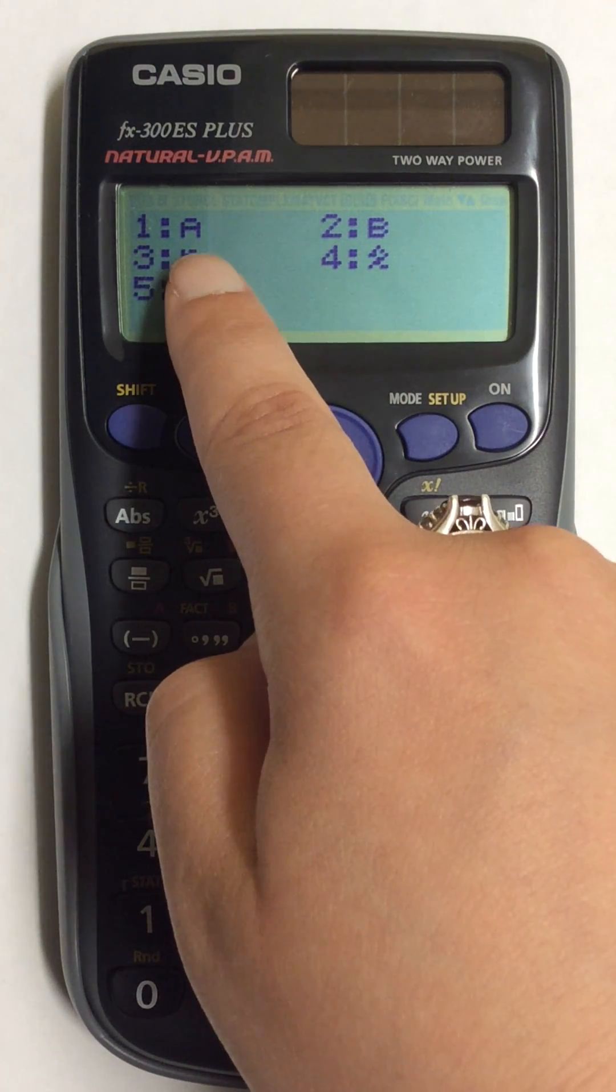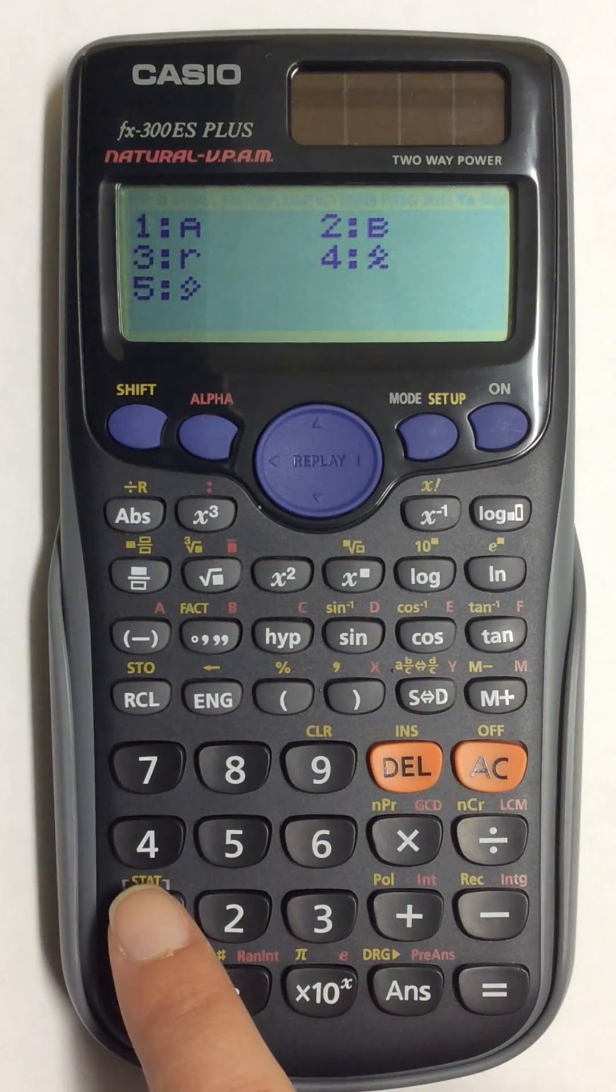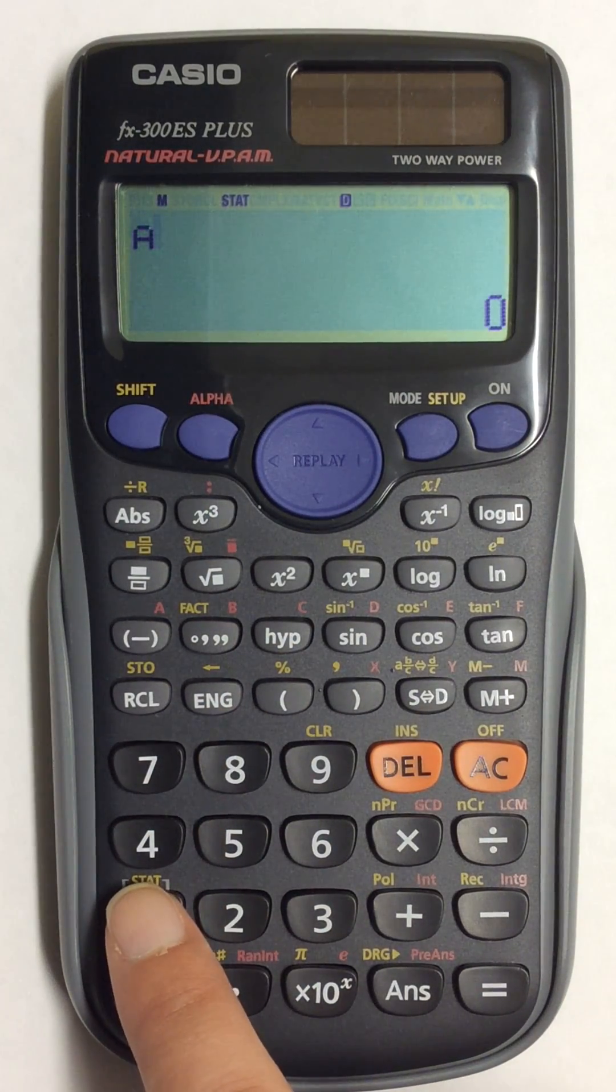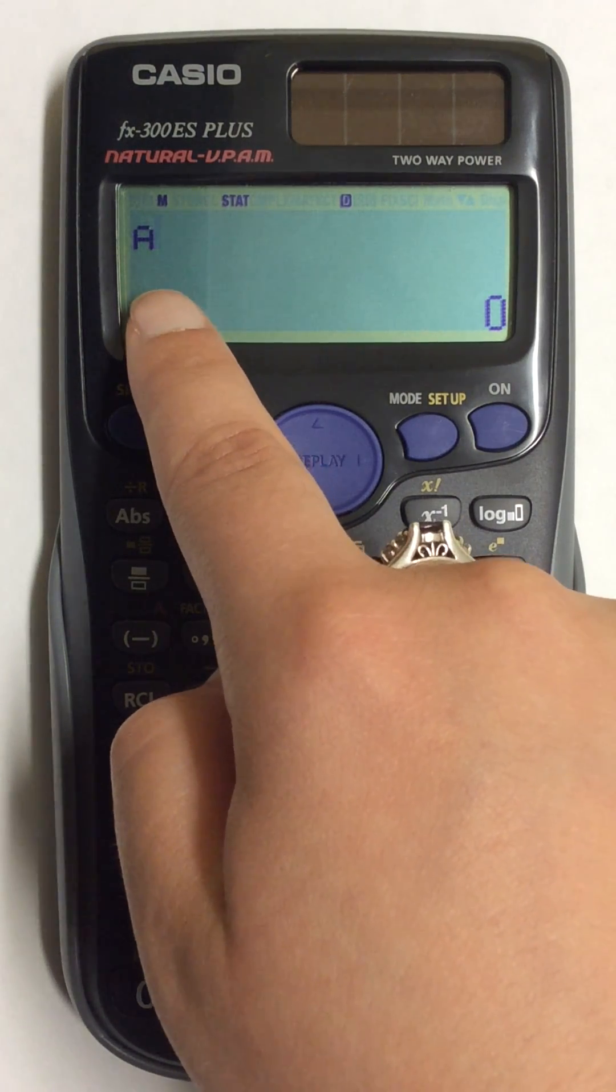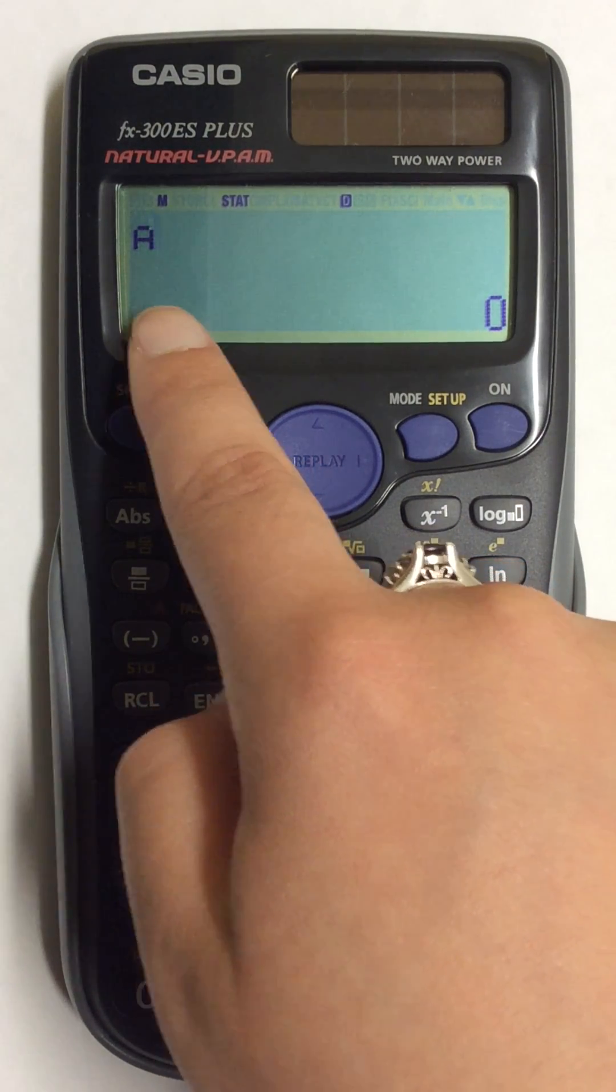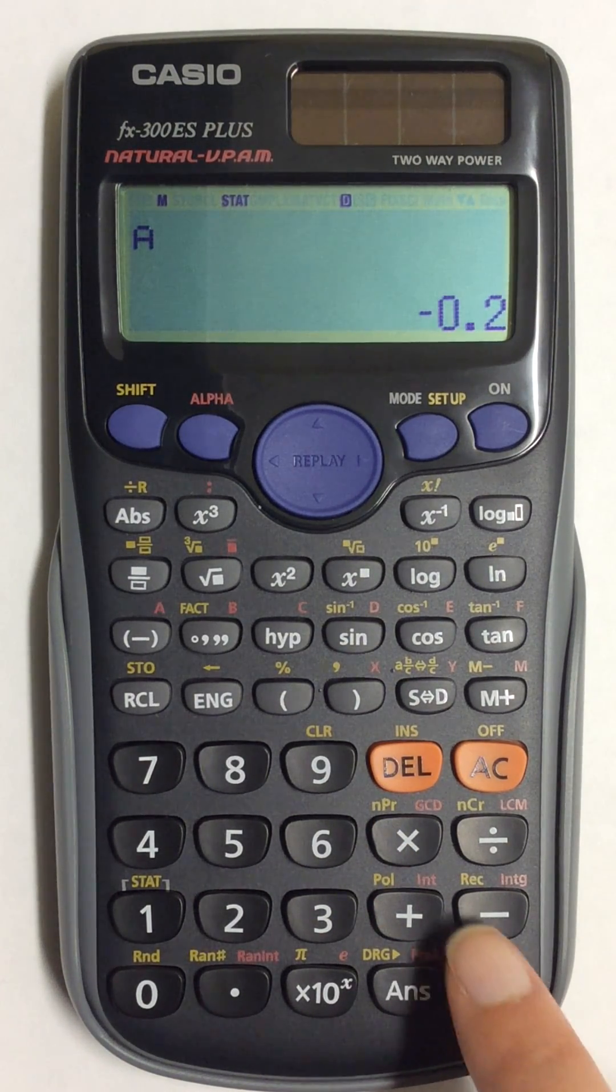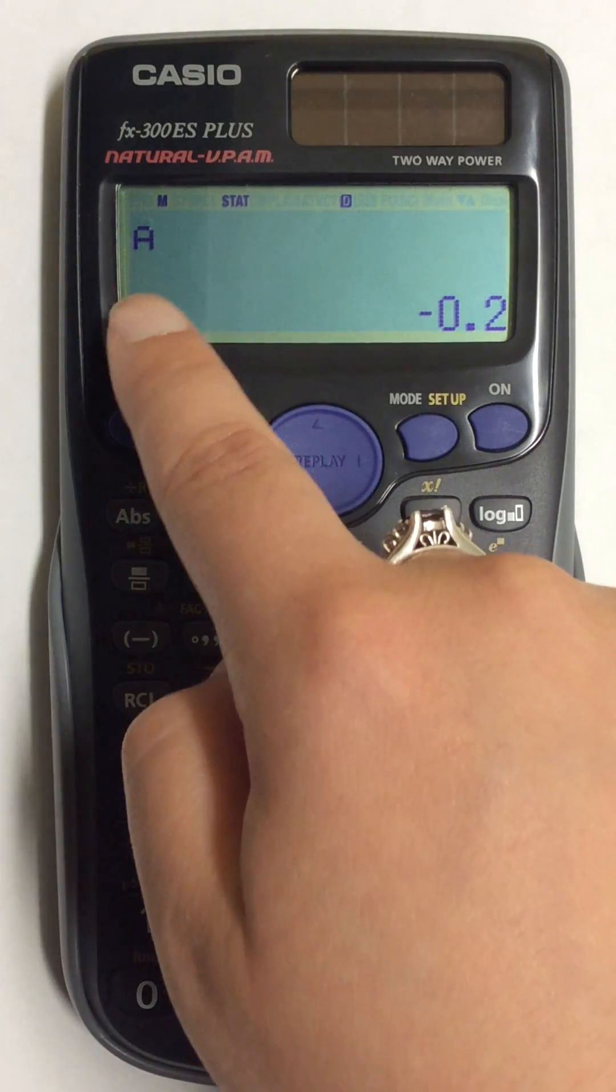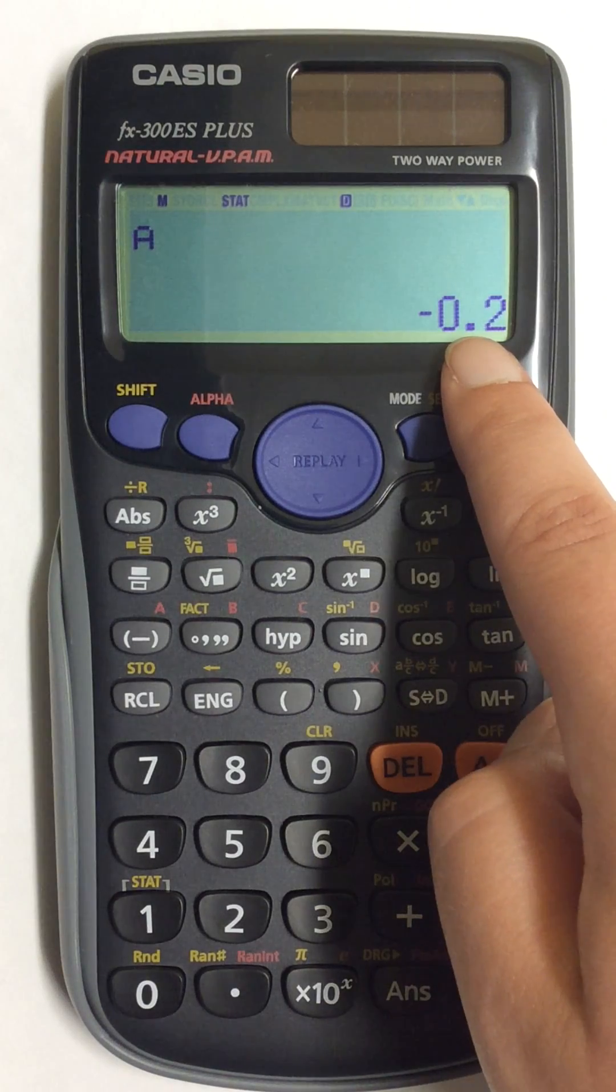So I'm first going to find my y-intercept. I'm going to come down here and press 1. My cursor is blinking on the screen, which means I haven't found A yet, but I first need to hit the equals button. So now A comes up on the screen as negative 0.2.